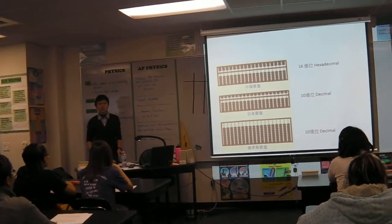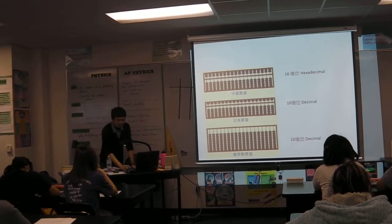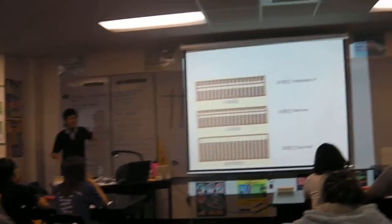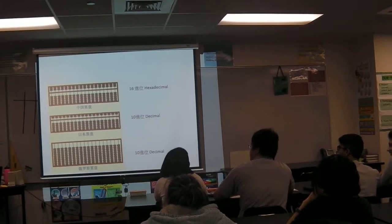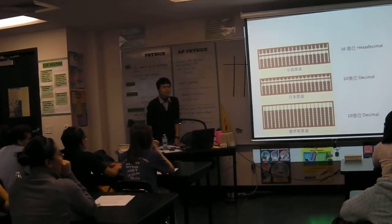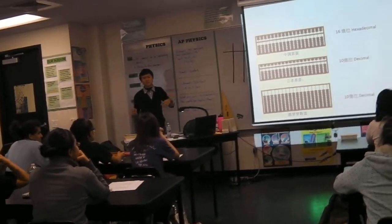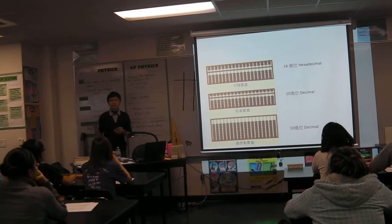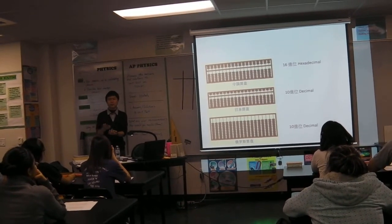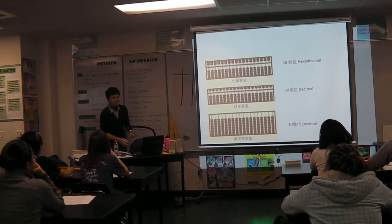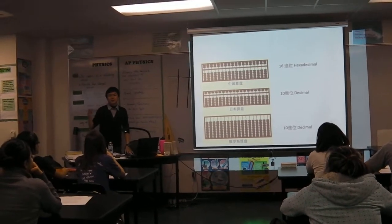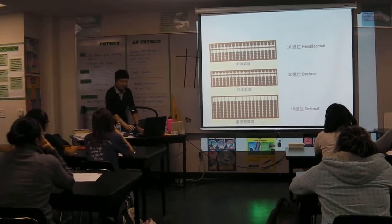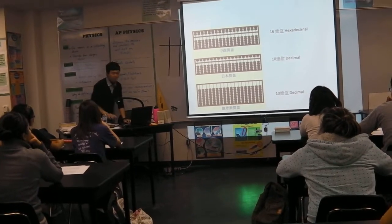I want to introduce three kinds of abacuses. The first is hexadecimal — anyone know this? It's from China. Different places have different abacuses. This kind is used to calculate weight, because our ways of counting weight are different from kilograms or pounds. This was used before in China, but now we usually use the Japanese one — the decimal one. The third kind of abacus is the Russian one.